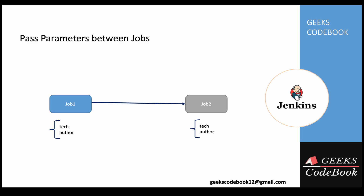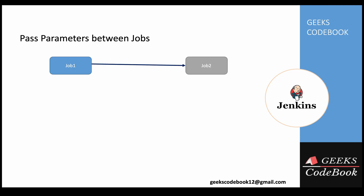You will also learn in this tutorial what build parameters are and why you need them. Build parameters are used whenever you want to pass dynamic information to a job while triggering it. You can create those parameters in the configure section of the job.